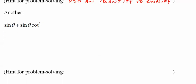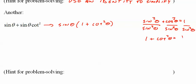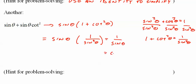One last example. I'm going to factor out a sine theta, leaving one plus cotangent squared theta. From the identity: divide sine squared plus cosine squared equals one through by sine squared theta to get one plus cotangent squared theta equals cosecant squared theta, which is one over sine squared theta. So we have sine theta times one over sine squared theta, which equals one over sine theta, which equals cosecant theta.